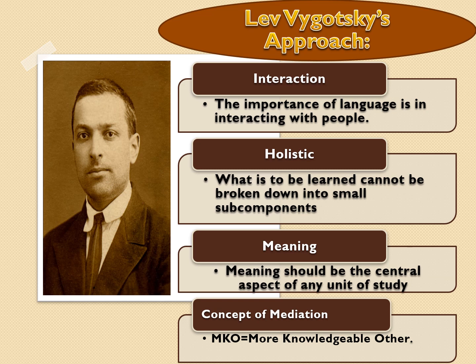Vygotsky believed that culture plays an important role in shaping cognitive development, and therefore development varies across cultures and places. The more knowledgeable other (MKO) can be anyone with a greater understanding of the task or concept the child is trying to learn. Key aspects of his theory include the importance of interaction and language, holistic rather than fragmented learning, meaning as the central aspect of any unit of study, and the concept of mediation through the MKO.